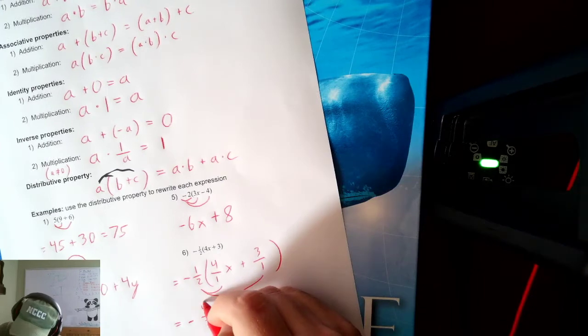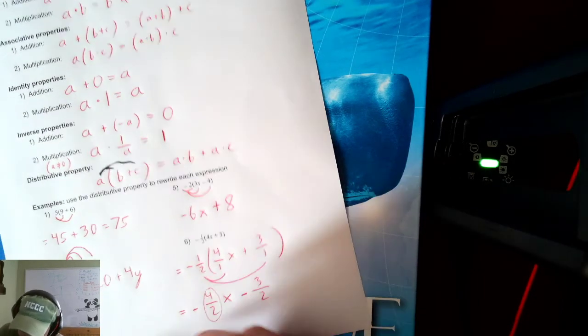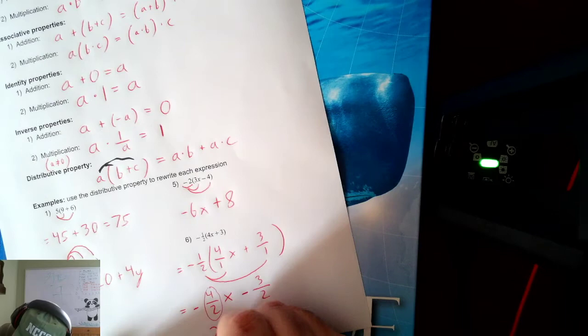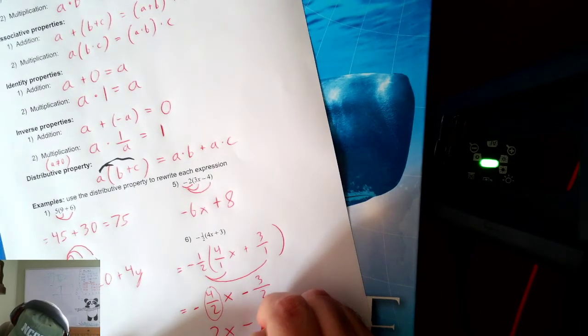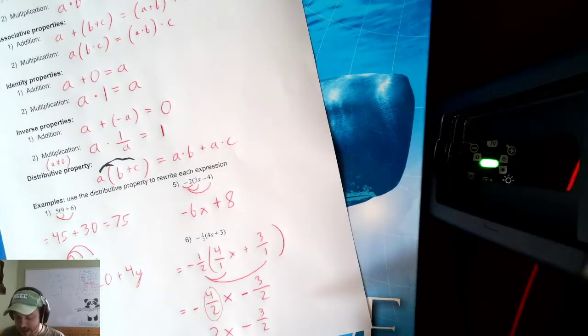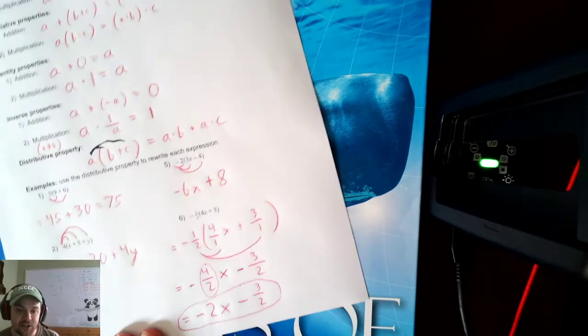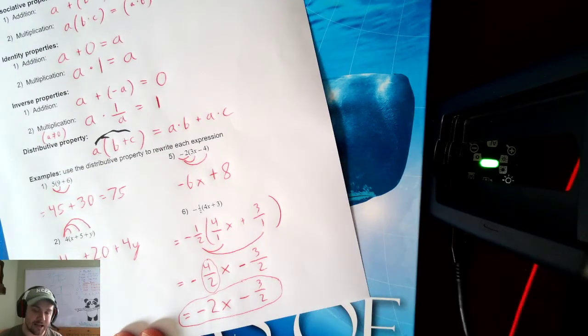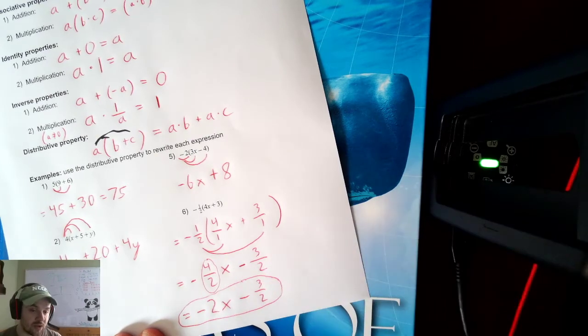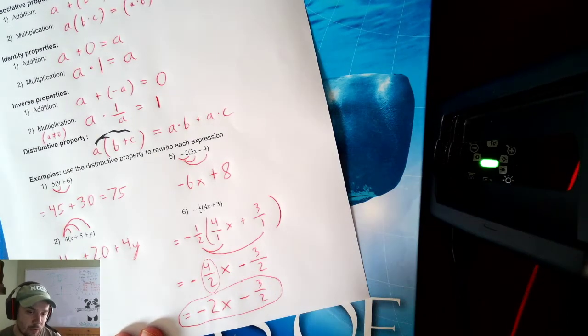Now, this right here simplifies 4 divided by 2. That becomes plain old 2. And then 3 halves doesn't simplify, so I leave that as a fraction. So my answer becomes negative 2X minus 3 halves because 4 over 2 reduces. Always reduce. Always, always, always reduce.